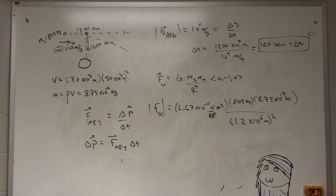Let's see, let me put this in my calculator. 6.67 times 10^-11 times 805 times 8.75 times 10^17 divided by 1.2 times 10^6 quantity squared.